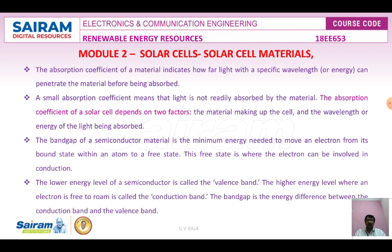Silicon wafers have long been a primary base for the assembly of solar cells, manufactured with the help of silicon dioxide. The absorption coefficient of a material indicates how far light with a specific energy can penetrate through the material before being absorbed — that is the main criteria for the solar cell.